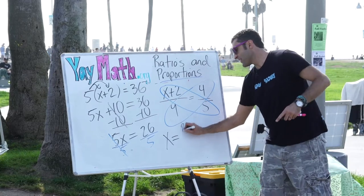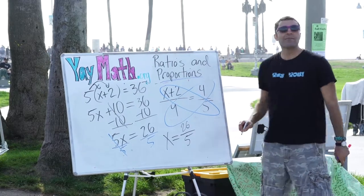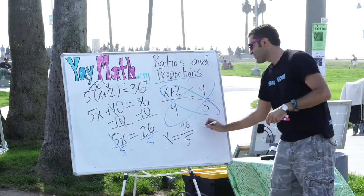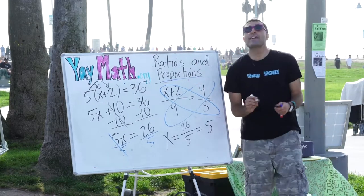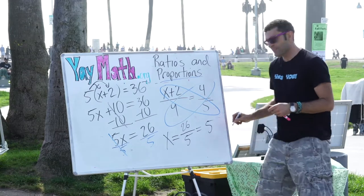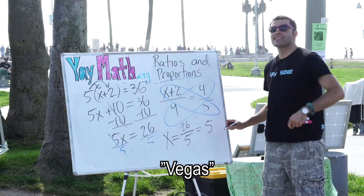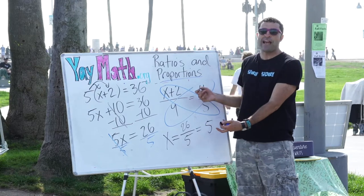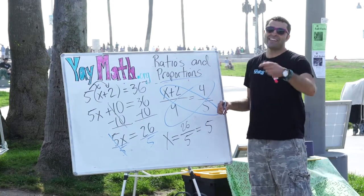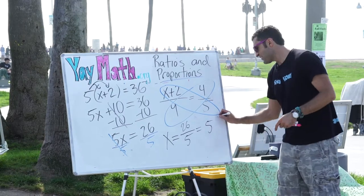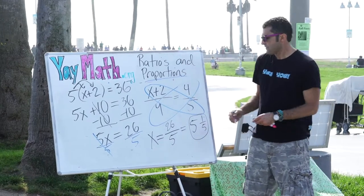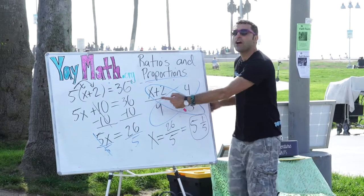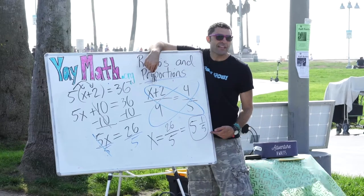Let's talk about what remainder means. 26 over 5 — how many times does 5 go into 26? 5 times. And how many fifths remain? 1. So x equals 5 and one fifth. The point of doing the cross-multiply method was that we wouldn't readily know that x is 5 and a fifth without working through it.